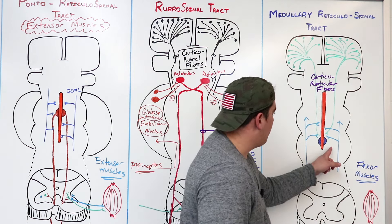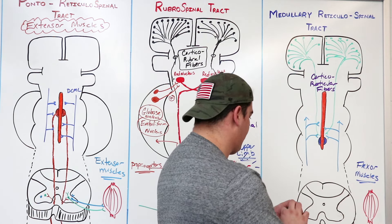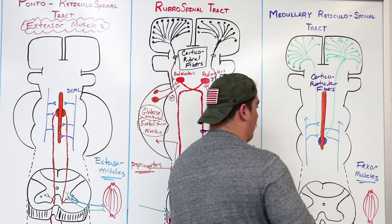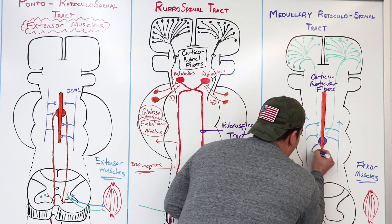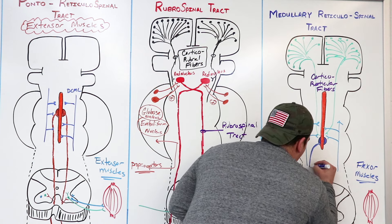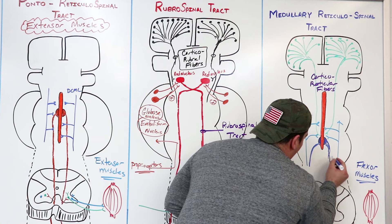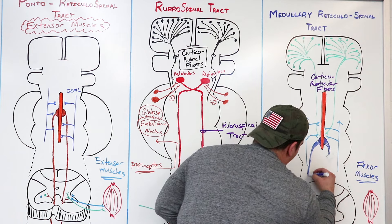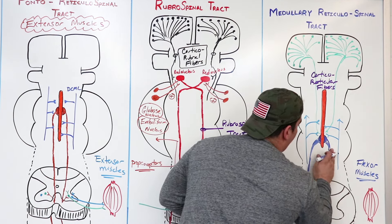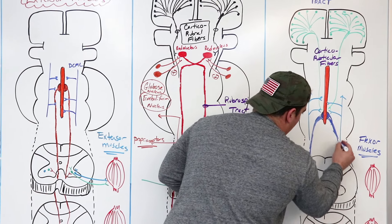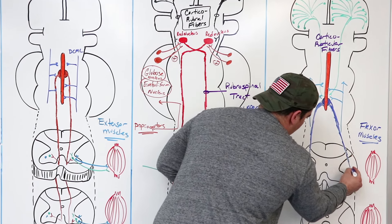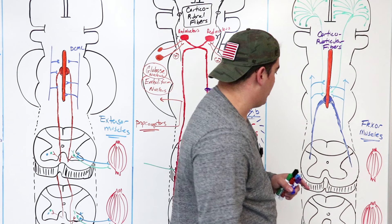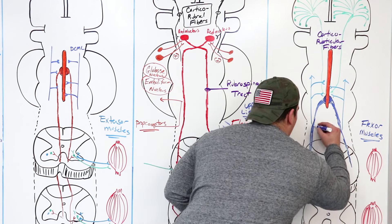Once the medullary reticulospinal tract is stimulated, it gives off its axons. The pontoreticulospinal moved into the anterior white column, but the medullary, once it gives off its descending fibers, these guys specifically move into the lateral white column. Here are the fibers coming down from the medullary reticular formation going into the lateral white column.